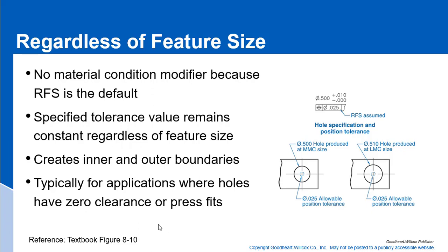RFS creates inner and outer boundaries, and it's typically for applications where the holes have zero clearance or you're trying to press fit a pin in location. MMC modifiers are great if you're trying to assemble parts that fit, but if you're trying to precisely locate a hole that a pin is going to be pressed into, you cannot use MMC modifiers. The tolerance zone stays the same regardless of what size the hole is actually produced at.